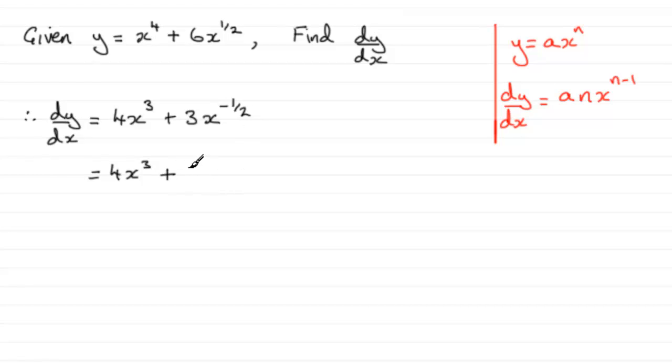So I would change that to 3 multiplied by, now anything, any negative power is the reciprocal of it, 1 over in other words x to the positive power here. So 3 multiplied by 1 over x to the power 1 half. And if you multiply that out you get 4x cubed plus 3 divided by x to the power half.